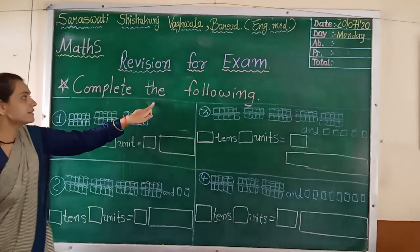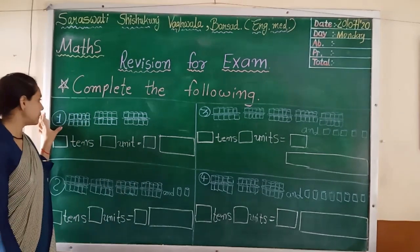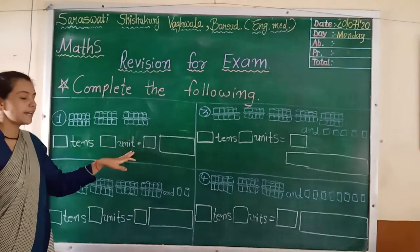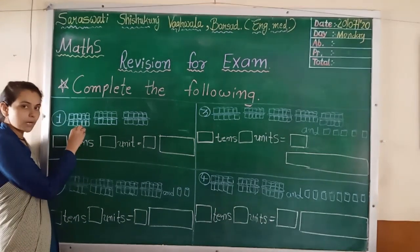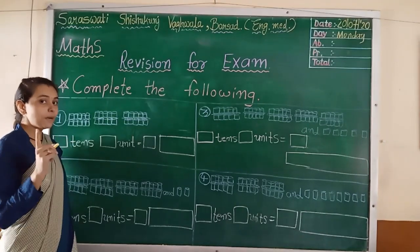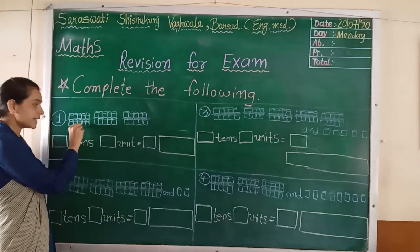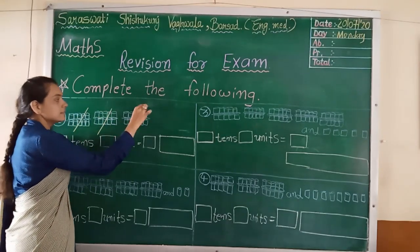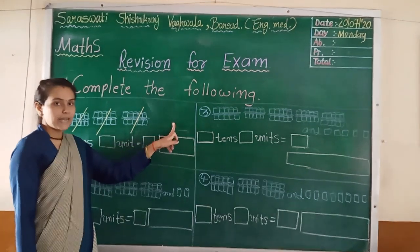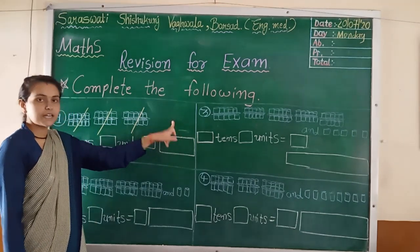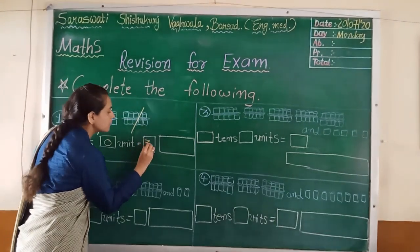Now, look at here. Complete the following. See, this topic we have studied — bundles. How to count them? So, see the first number. Here I have drawn bundles. We have to write tens and units, and the number and number name. Let's start. First, we have to count bundles. This is one bundle. Remember that in one bundle, how many sticks are there? Ten, right? So, we can say one ten. One ten, two tens, three tens. So here what we have to write? Three. Three tens, zero units. When no unit is there, you have to write zero. So, which is our number? Three, zero — thirty.